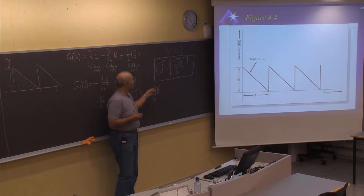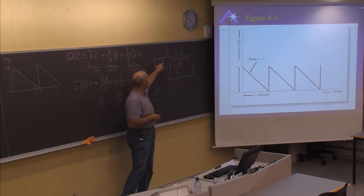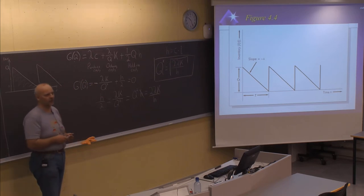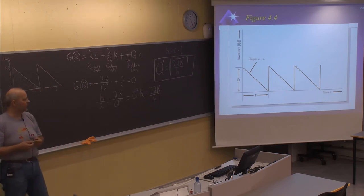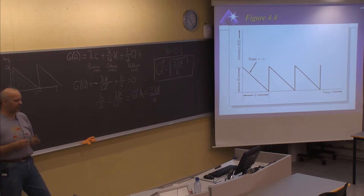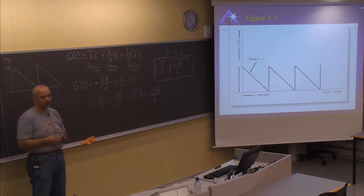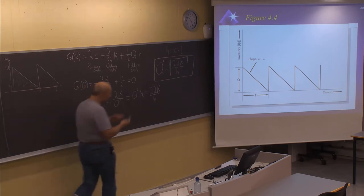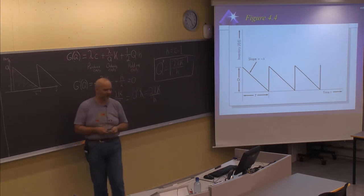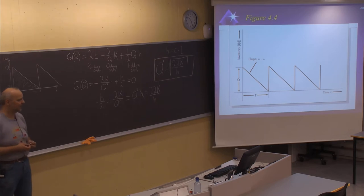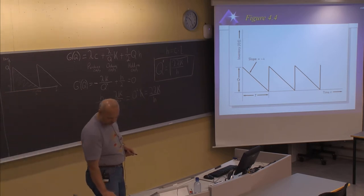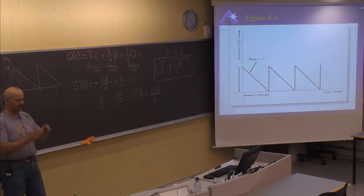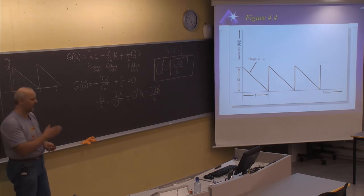This is called the EOQ formula, also denoted as Q*, the optimal Q. It can also be named Wilson's formula, named after Wilson, who was the first to use this formula extensively. It was proved in 1913 by a guy called Harris, and Wilson started in the 1930s to use it extensively. This formula can be used to determine the optimal order size in a simplified situation with deterministic, fixed-rate demand.